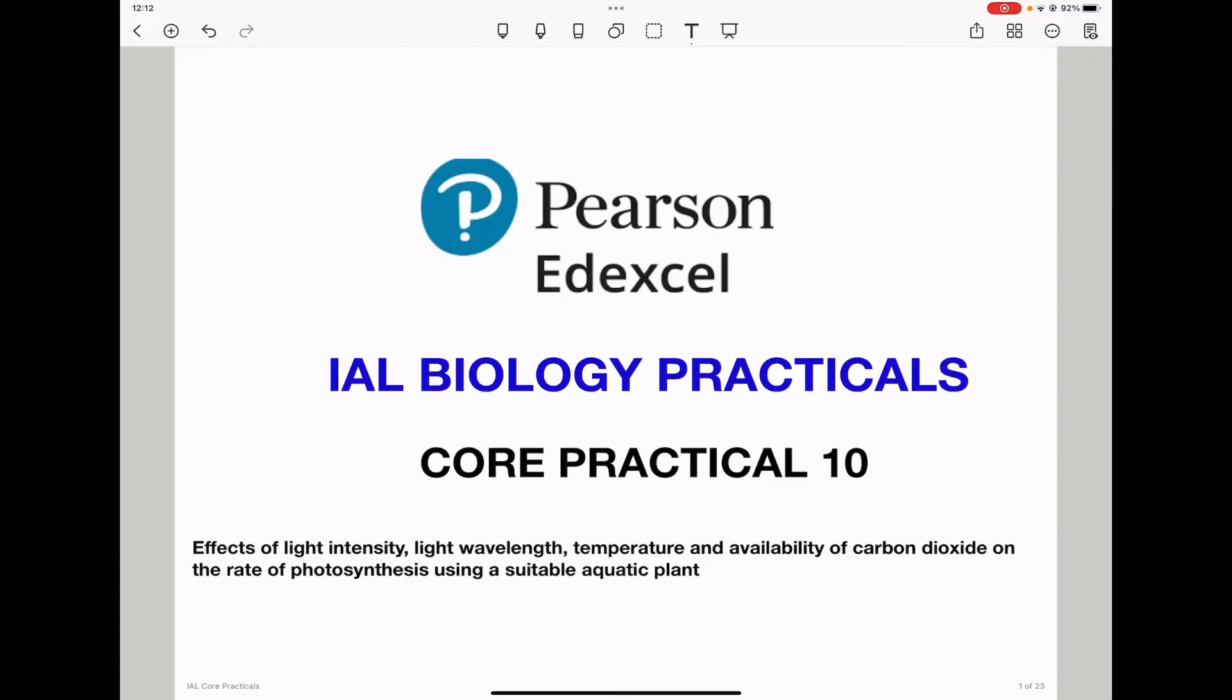Here we study the effects of light intensity, light wavelength, temperature, and availability of carbon dioxide on the rate of photosynthesis using a suitable aquatic plant. I have separated this practical into four different videos: one studying light intensity, another studying light wavelength, another studying temperature, and the last one studying carbon dioxide concentration. So let's begin with the first experiment.